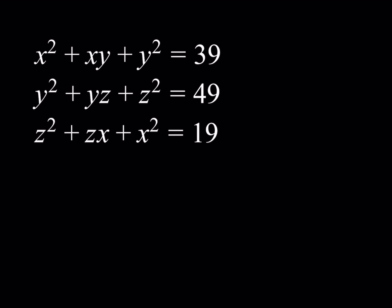We do have a system of equations: x squared plus xy plus y squared is equal to 39; y squared plus yz plus z squared is equal to 49; and z squared plus zx plus x squared is equal to 19. And we're looking for real solutions.